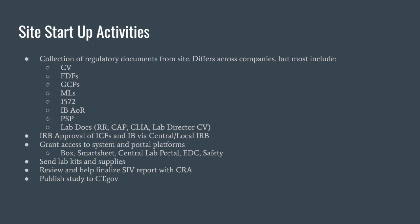This includes CVs, FDFs, GCPs, medical licenses, the 1572, the investigator's brochure, protocol signature pages, and lab documents if required. It also includes IRB approval — whether local or central — and we want to make sure we're granting sites access to the resources they'll need to execute the trial.